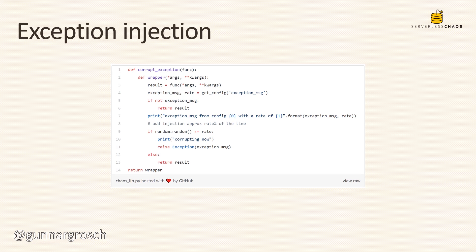We also have exception injection, so we can raise an exception into our function with a message that we choose. These additions to the layer are really cool because now we can perform more chaos engineering experiments than before. Adrian has also added the rate functionality, so we can choose how often the failure is injected — not on every invocation, but on half or a quarter, or whatever we choose.